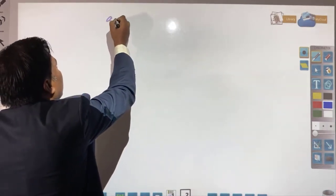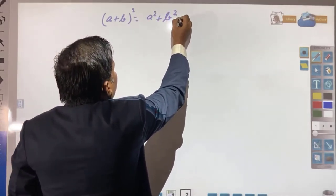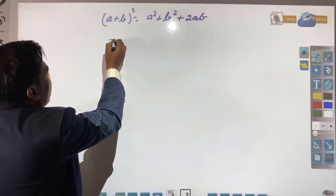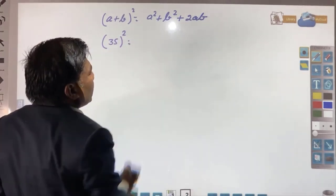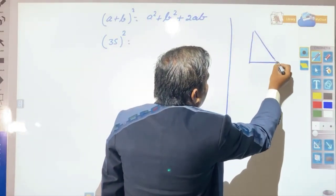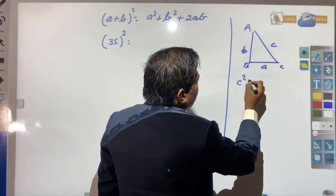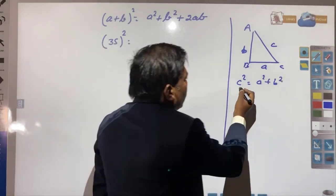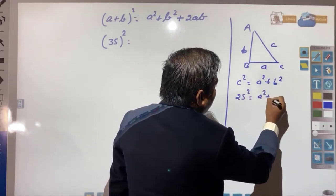As we know the identity: (a + b)² = a² + b² + 2ab. Now a plus b we have got, that is 35, so 35² = a² + b² + 2ab. Now consider the right angle triangle with sides a, b, and c. By Pythagoras theorem, c² = a² + b². Since c equals 25, we have 25² equal to a² + b².